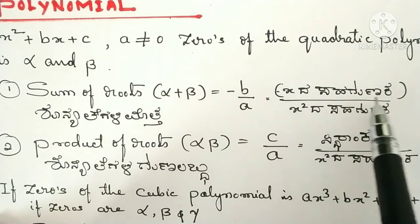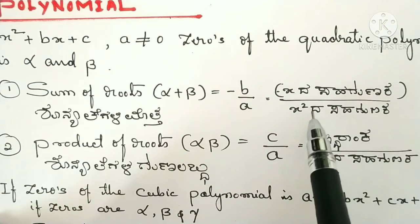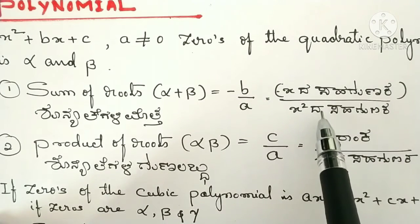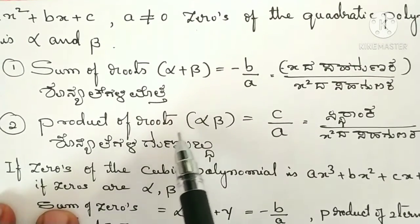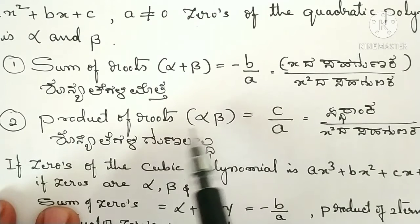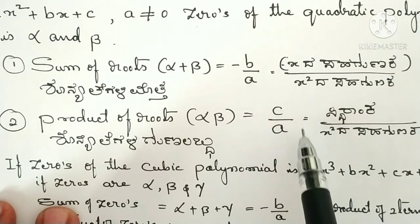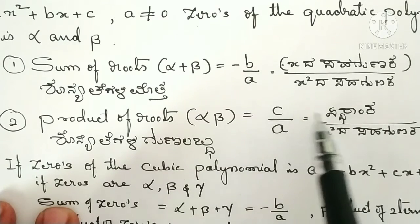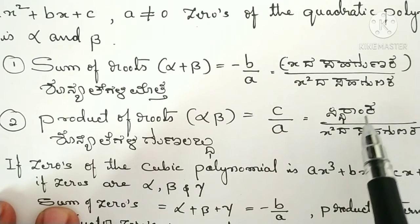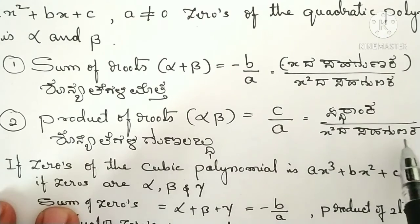That is, minus of the coefficient of x divided by the coefficient of x squared. Product of roots alpha into beta, that is the product of zeros, is equal to c by a — the constant term divided by the coefficient of x squared.